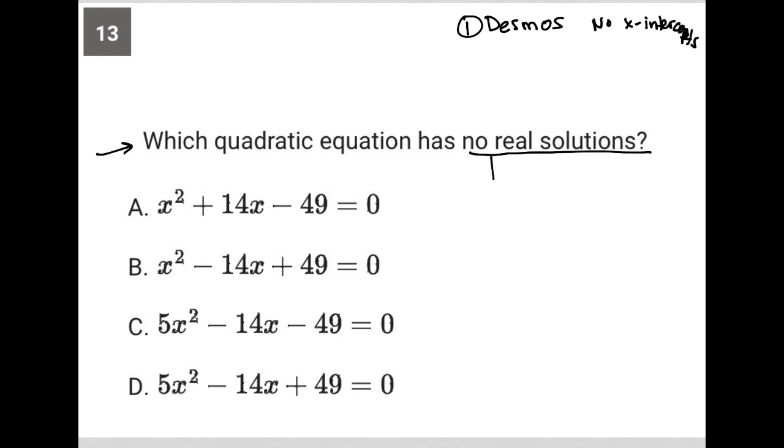Otherwise, when we look at the term no real solutions, I always like to pay attention to the discriminant, which is b squared minus 4ac.